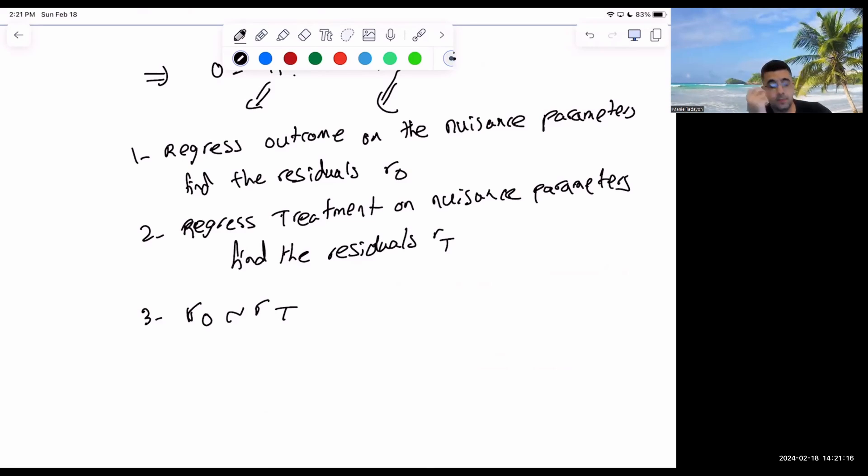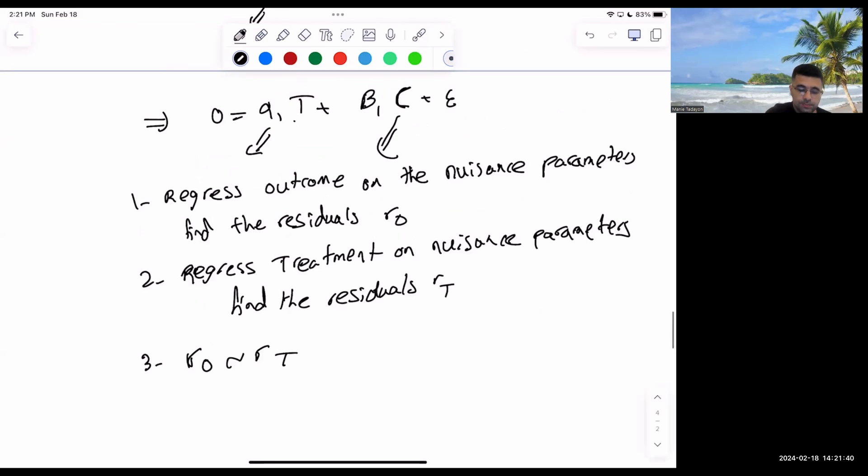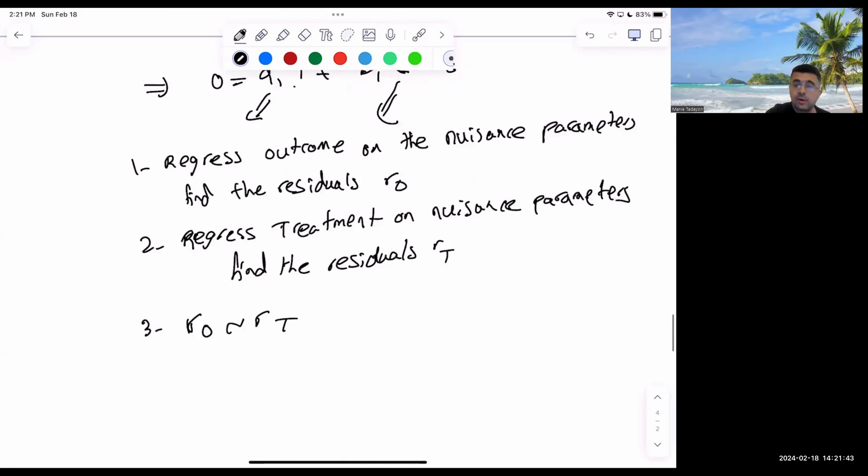Now, so that's what FWL theorem says. What does DML say then? DML says that, you know what, when you are regressing the outcome on the nuisance parameters, you can use any machine learning model you like for that. Who said that you should use linear regression? You don't need to use linear regression. You don't need to use linear estimator. Use any ML model. Use XGBoost. Use GBM. Use neural network. Anything you like. And then when you're regressing the treatment on the nuisance parameters, use any machine learning model. Double machine learning. Two machine learning models.